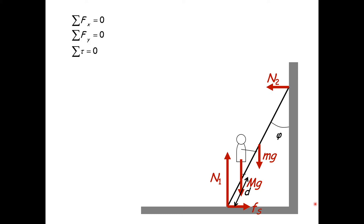This is a statics problem, so the sum of the forces is equal to zero — the sum of the x components equals zero, the sum of the y components equals zero, and the sum of the torques equals zero. Not only is the sum of the torques zero, but it has to be zero at all possible pivot points. If there were a pivot point where the torques were not zero, you would have a rotation about that pivot point, which contradicts the static case.